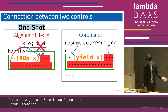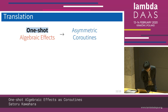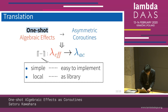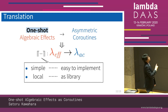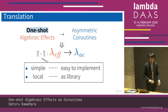So we relate coroutines to one-shot algebraic effects, where the handler can manipulate one-shot continuations. This slide summarizes our translation. We made the connection between coroutines and one-shot algebraic effects. Based on this, we defined the translation from lambda-f to lambda-ac. Since it is simple, we can easily implement algebraic effects. And since it is a local translation, we can implement algebraic effects as a library.